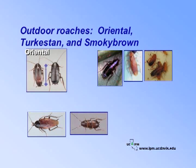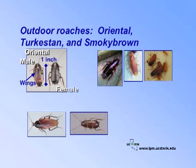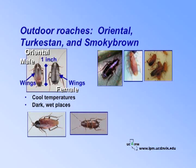The oriental cockroach is one inch long and almost black. In males, wings are shorter than the body; however, female wings are undeveloped. Oriental roaches prefer cool temperatures and are found in dark, wet places, such as wood piles, drains, water meter boxes, ivy, and ground cover.